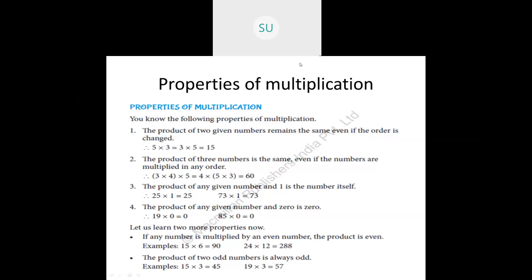The third property: the product of any given number and 1 is the number itself. Even the largest number multiplied by 1 gives that number. For example, 69,872 times 1 is 69,872. Examples from the textbook: 25 times 1 is 25, and 73 times 1 is 73.